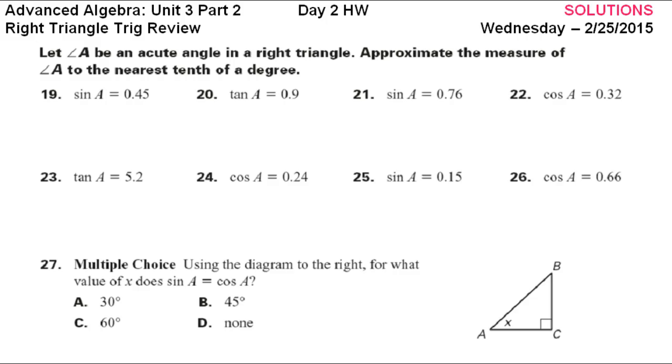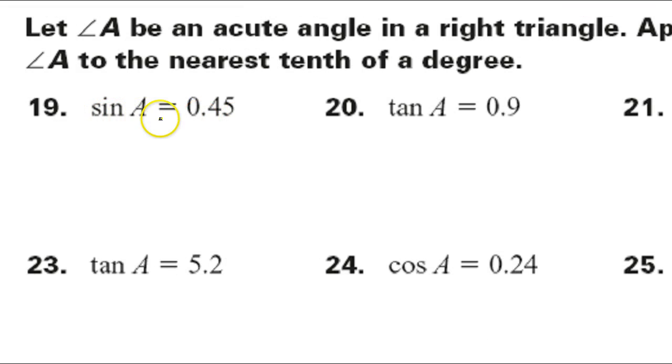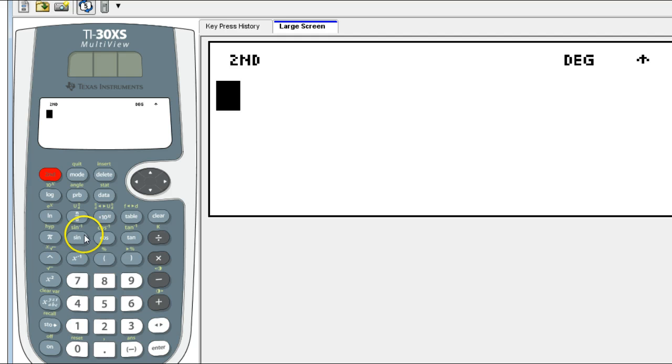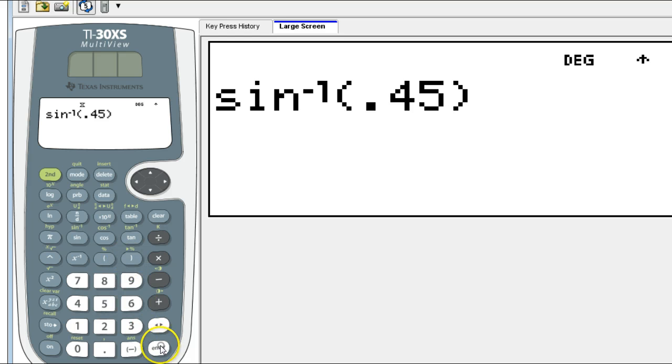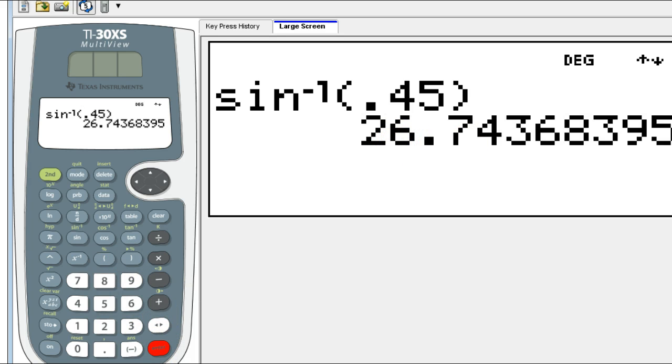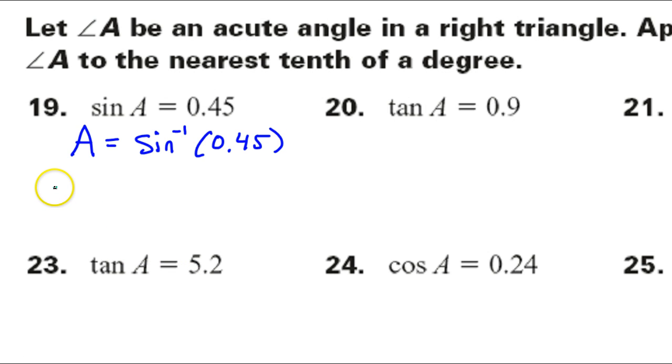Nearest tenth of a degree it says. All right, if you have the sine of an angle and you want to find the angle, you're going to need to use the inverse trig function. So the angle is going to equal the inverse sine of 0.45. And you can just put that in your calculator. So inverse sine, second sine, 0.45. So that is 26.7 degrees. Okay, so the measure of angle A is 26.7 degrees.